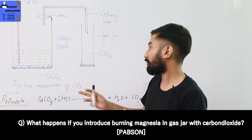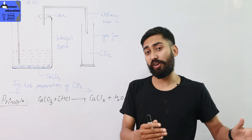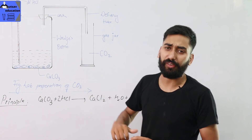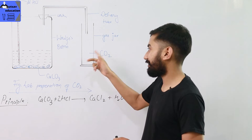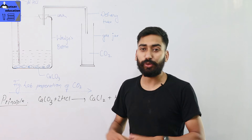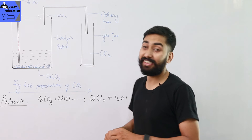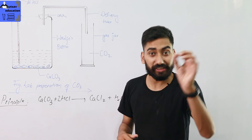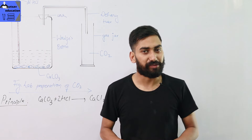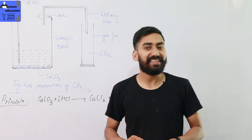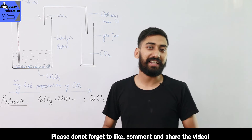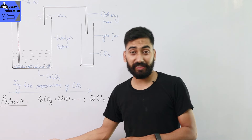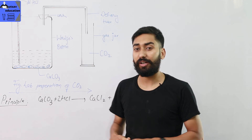You can test carbon dioxide using different methods. You can pass carbon dioxide over quicklime or observe its effect on burning magnesium. These are the various tests and properties of carbon dioxide. This is all about the lab preparation of carbon dioxide — the principle, and how to prepare it.